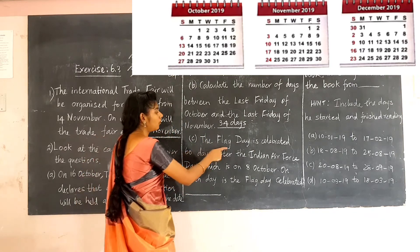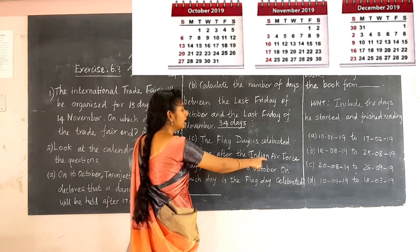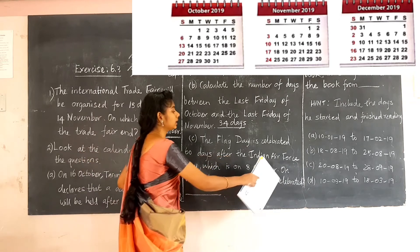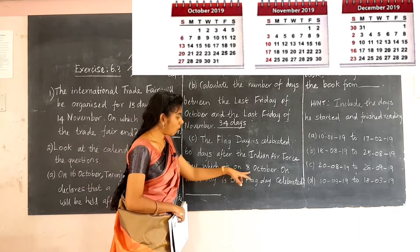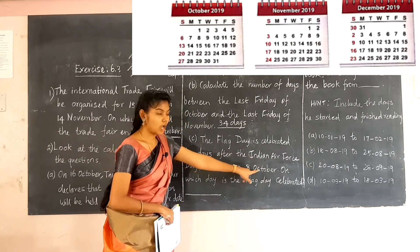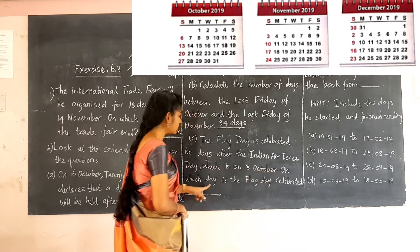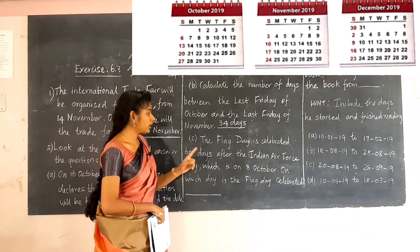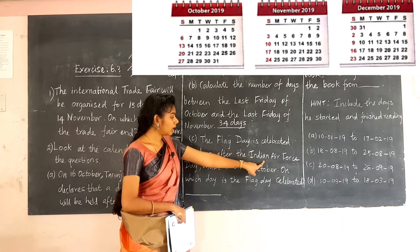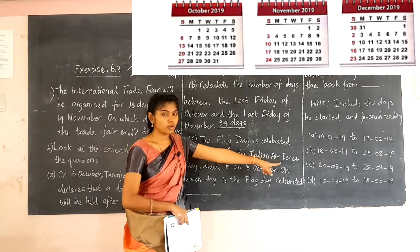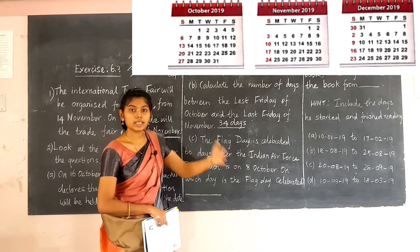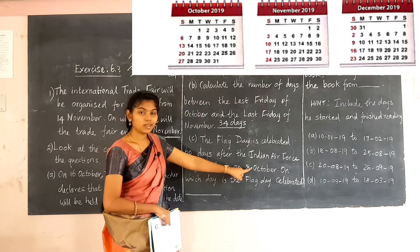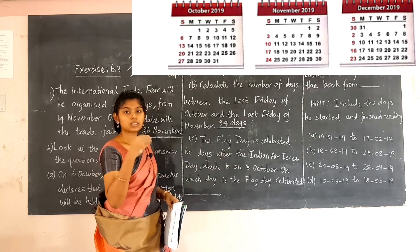Next: the Flag Day is celebrated 60 days after the Indian Air Force Day. The Indian Air Force Day is on 8 October. See the calendar. From 8 October, you have to count 60 days: 9 October, 10 October, 11 October, and so on. On which day is the Flag Day celebrated?